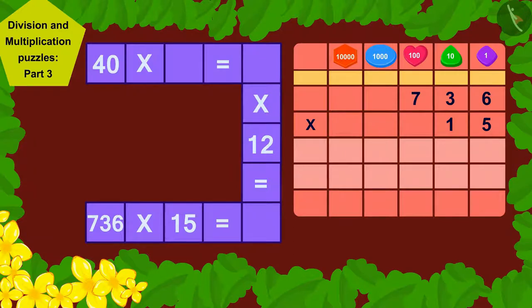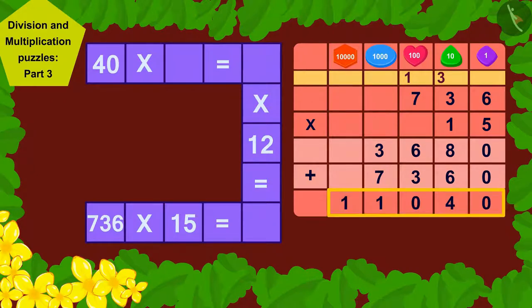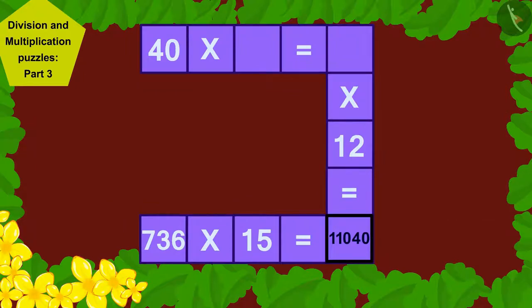There is only one place where the numbers on both sides of the multiplication are written. Therefore first I found the answer of 736 times 15 in this way and wrote 11,040 on this blank space.